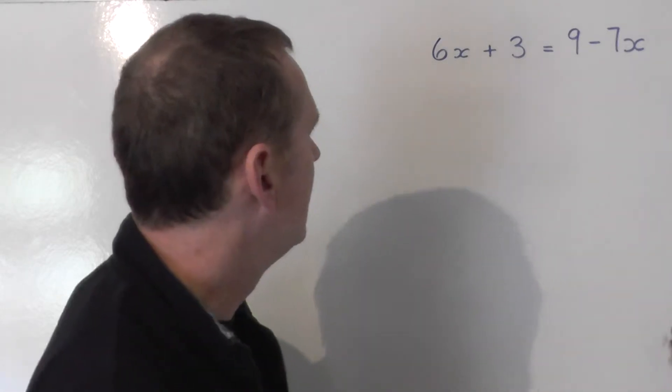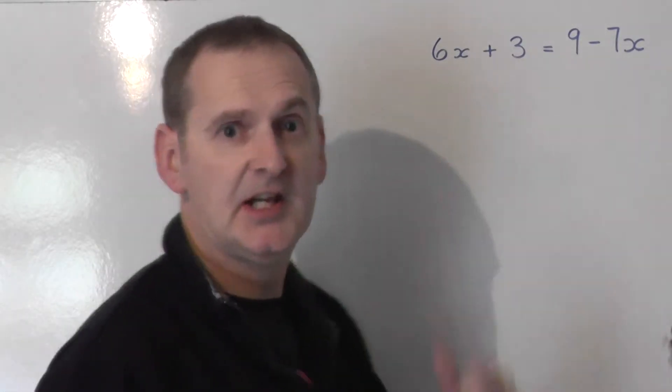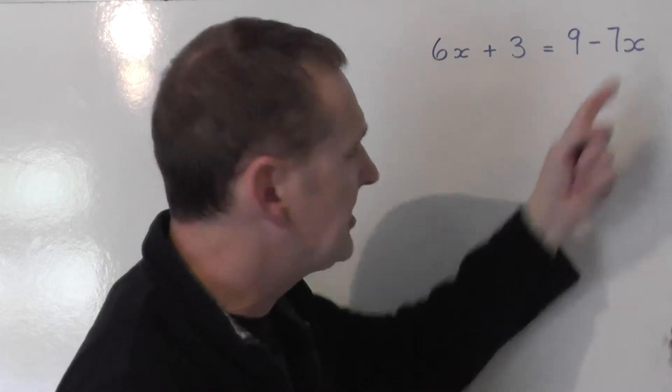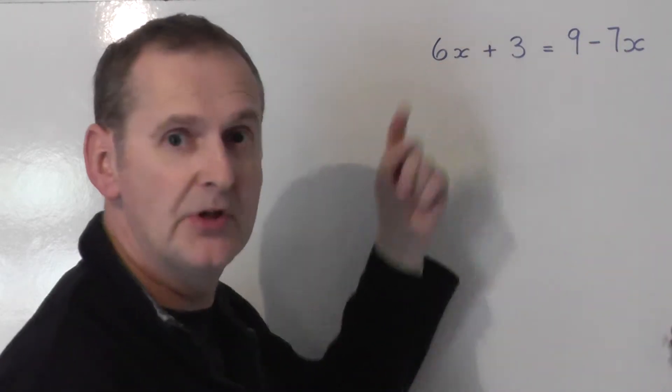Well, I can see that we've got more x's, actually on the left-hand side, because on the right-hand side it's minus 7x, and minus 7 is a smaller number than positive 6.